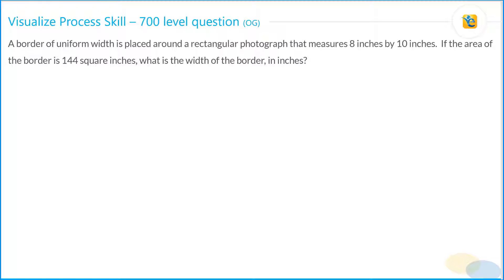All right, so we're going to solve this question now. Step-by-step process. Read the question statement carefully, one part at a time. A border of uniform width—uniform is an important word here. Uniform width is placed around a rectangular photograph that measures 8 inches by 10 inches.